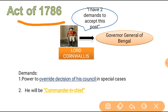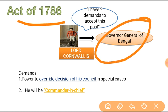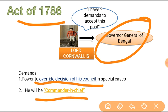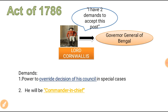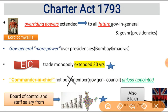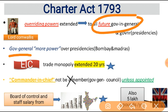We saw Lord Cornwallis, who was the Governor General of Bengal. Two charges were created — he said 'I will be the Commander-in-Chief,' and the other council, which was the executive council, whose decisions he could override. This power extended to future Governors General and Governor Presidencies, meaning those who get power in the future — the governors and generals — will be more powerful.